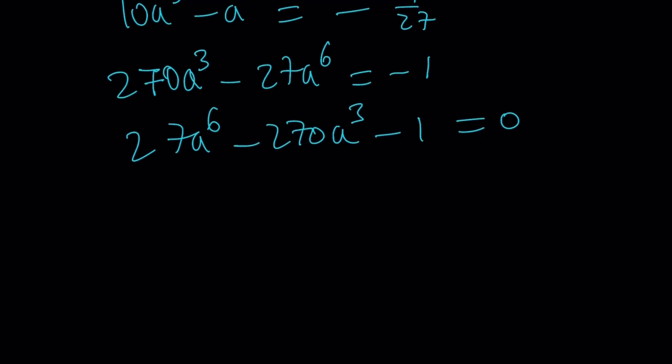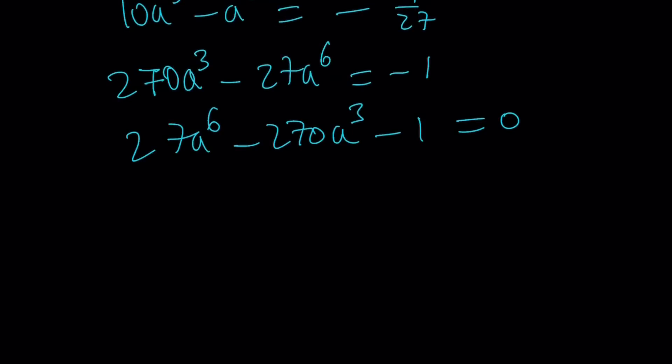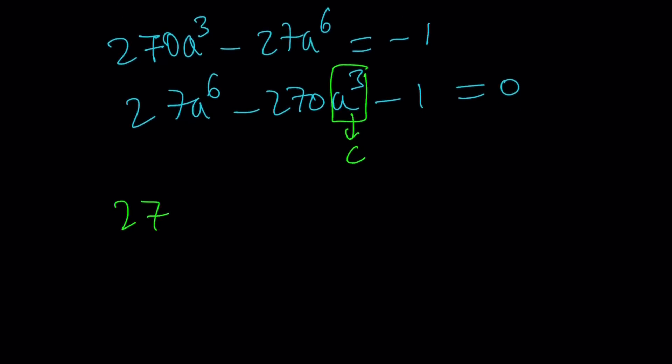Now, let's go ahead and use substitution to turn this into a quadratic equation. How do I use substitution? Let's call this c. Do you see what I see? So now we get 27c² - 270c - 1 = 0.